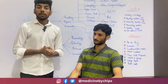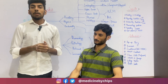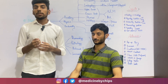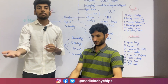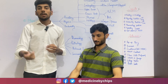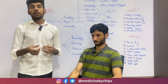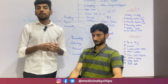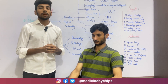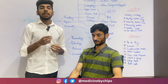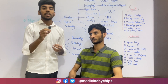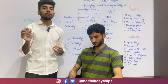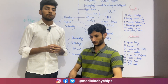Now coming to the brachial pulse examination. For the brachial pulse, we will again raise the patient's arm up to his heart level but in a supinated position. We will place the tip of our thumb just medial to the biceps tendon, press it for 15 seconds, and calculate the pulse rate. We will then multiply the pulse rate by four to get the overall beats per minute.